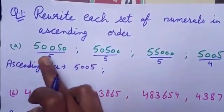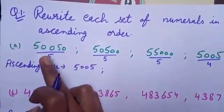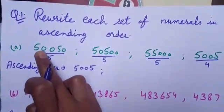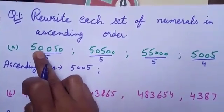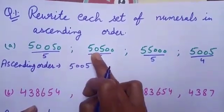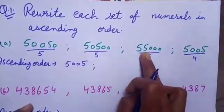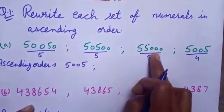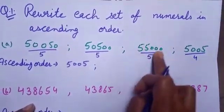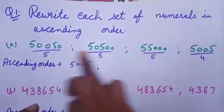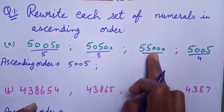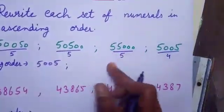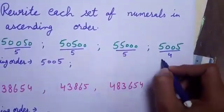Now I will compare the digit which is at the 1,000 place. Here, 0 is at the 1,000 place. Here, 0 is at the 1,000 place. And here, 5 is at the 1,000 place. It means this numeral is the greatest among them, so I will write this numeral last.